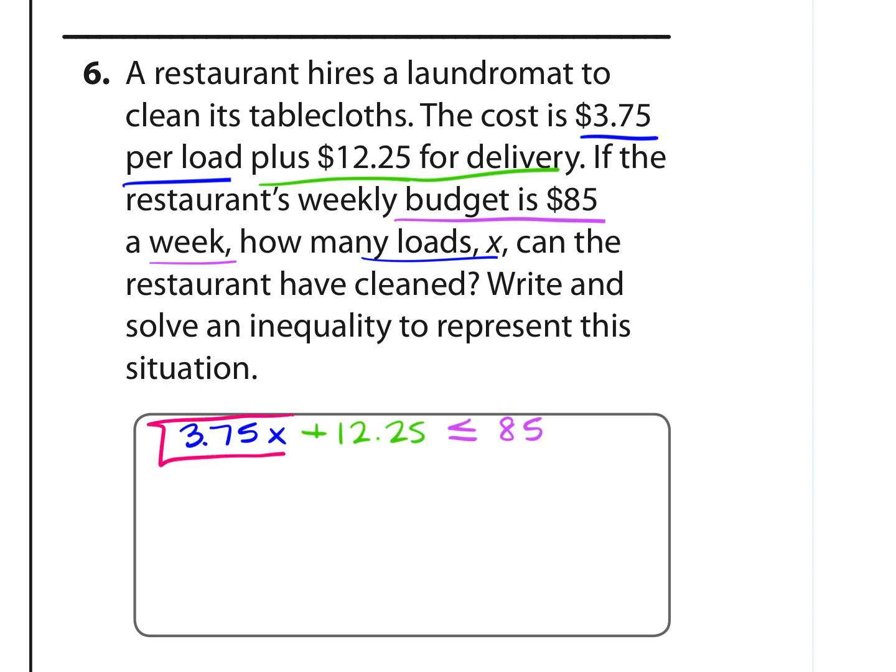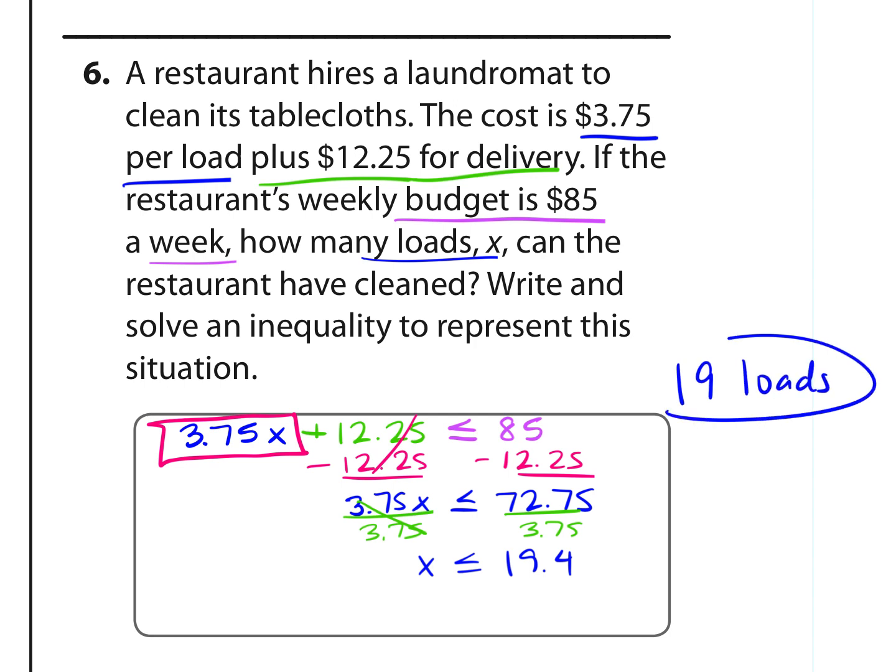Let's solve this two-step inequality. We're going to subtract $12.25 from both sides. We get $3.75 times X is less than or equal to $72.75. And then divide both sides by $3.75 to find out the number of loads of laundry. We get 19.4. And we've got to think about what that means. So they can spend less or they can get less than or equal to 19.4 loads of laundry. Well, you can't get part of a load like that, so it's going to be 19. Even if this had to have been 19.999, you can't round up to 20 because there's not enough money for it. So they can clean 19 loads for the money they have.